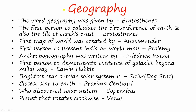The first question: the word 'geography' was given by Eratosthenes. The first person to calculate the circumference of earth and also the tilt of earth's axis was Eratosthenes. The first map of the world was created by Anaximander. The first person to present India on a world map was Ptolemy.